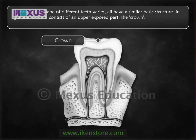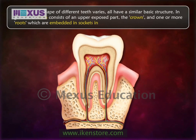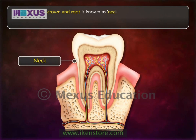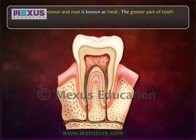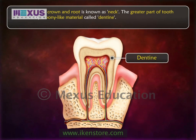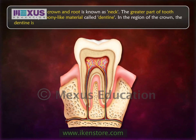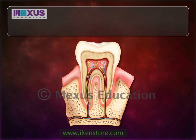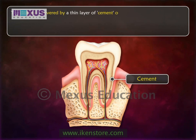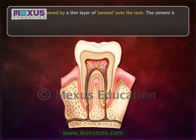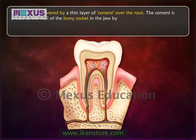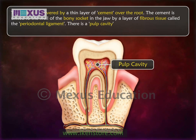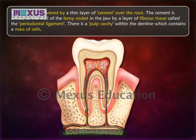Although the shape of different teeth varies, all have a similar basic structure. A tooth consists of an upper exposed part called the crown and one or more roots embedded in sockets in the jawbone. The junction of crown and root is known as the neck. The greater part of the tooth is formed by a bony-like material called dentin. In the crown region, dentin is covered by a much harder white material known as enamel. The dentin is also covered by a thin layer of cement over the root, which is united to the wall of the bony socket by a layer of fibrous tissue called the periodontal ligament.